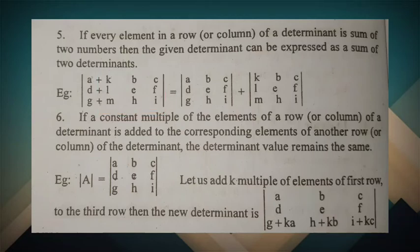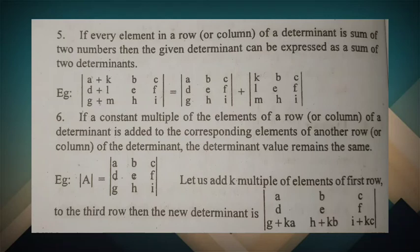Last property: if a constant multiple of the elements of a row or column of a determinant is added to the corresponding elements of another row or column, the determinant value remains the same. We calculate by adding a multiple of one row or column to another, and the values and the number of items added do not change the original determinant value.